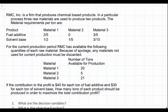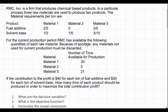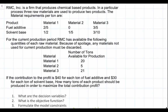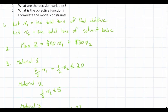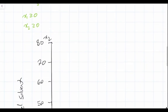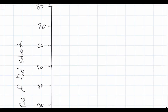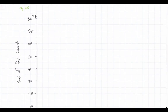This is the second video in a series of videos that help us solve a simple linear programming problem — particularly a linear programming problem that has a maximization objective function. If you need to review the problem, the decision variables, the objective function, or the model constraints, please see the previous video. In this video, we are going to solve this problem using a graphical solution.